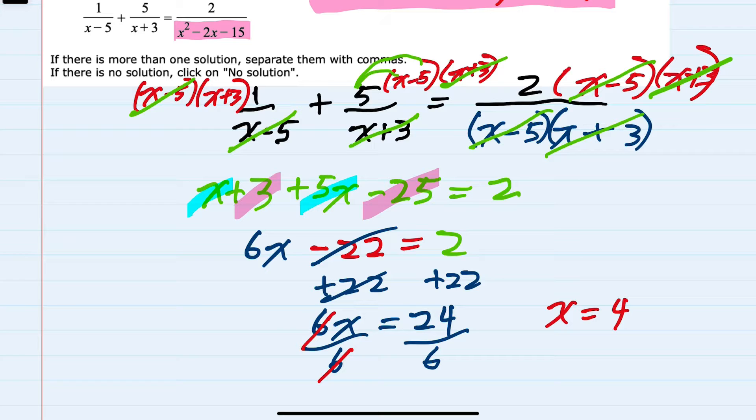And before I say that that is our solution, I need to check to make sure it doesn't give me a 0 in any of the denominators when I plug it in. So just doing a quick check, when I plug in x equals 4 to x minus 5, that does not give me 0. When I plug in x equals 4 to x plus 3, that does not give me 0. And since the denominator on the right-hand side is x minus 4 times x plus 3, since neither of those are 0, then that denominator is also not 0. So we have eliminated the no-solution possibility. Our solution is x equals 4.